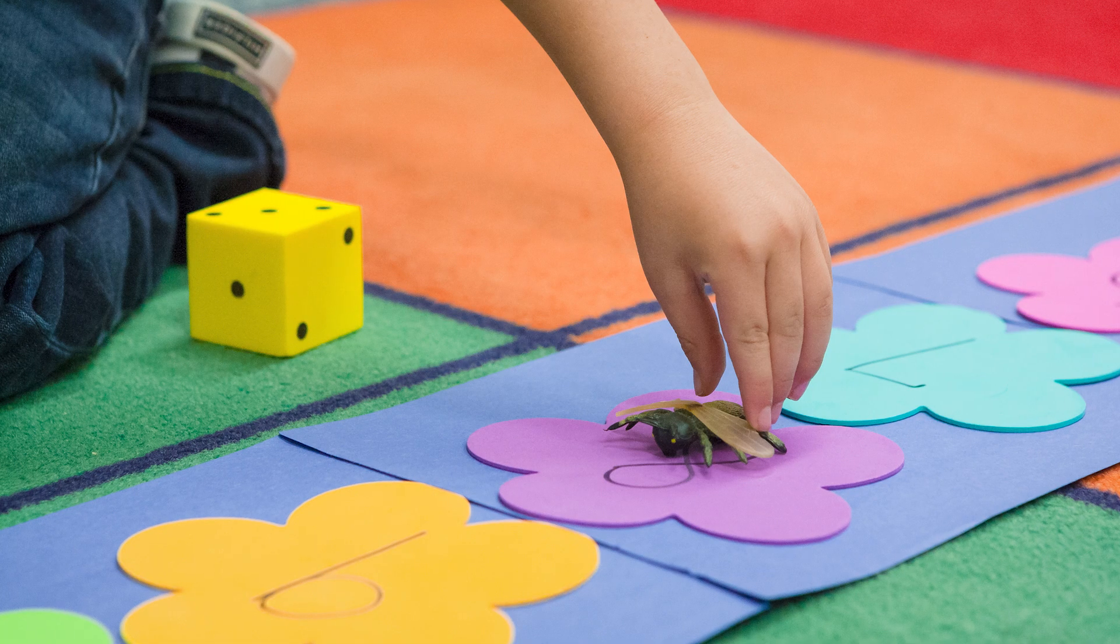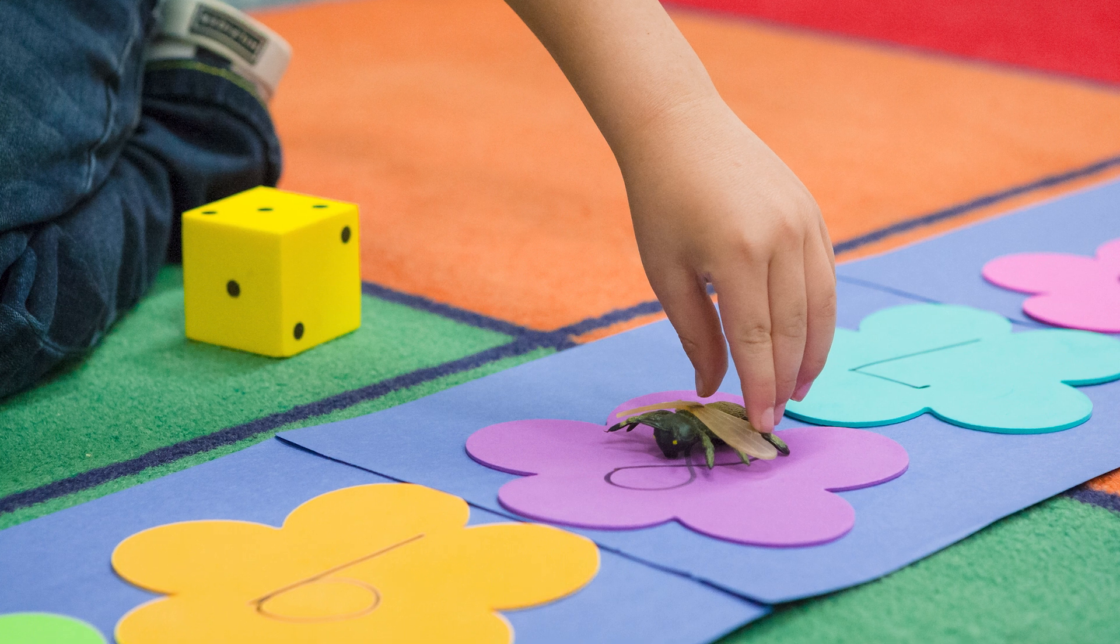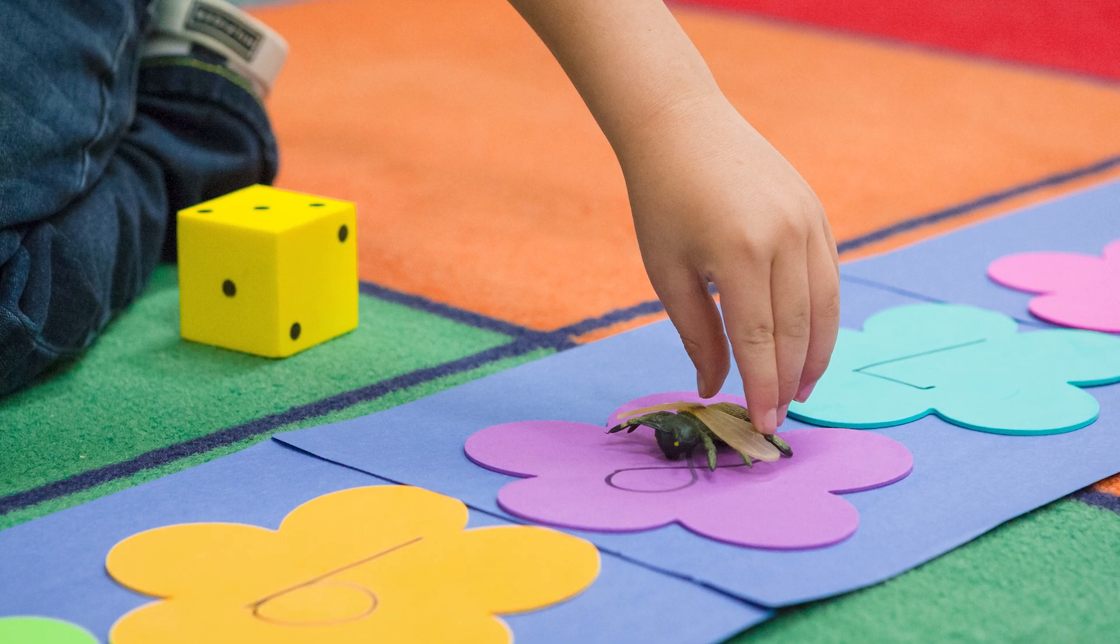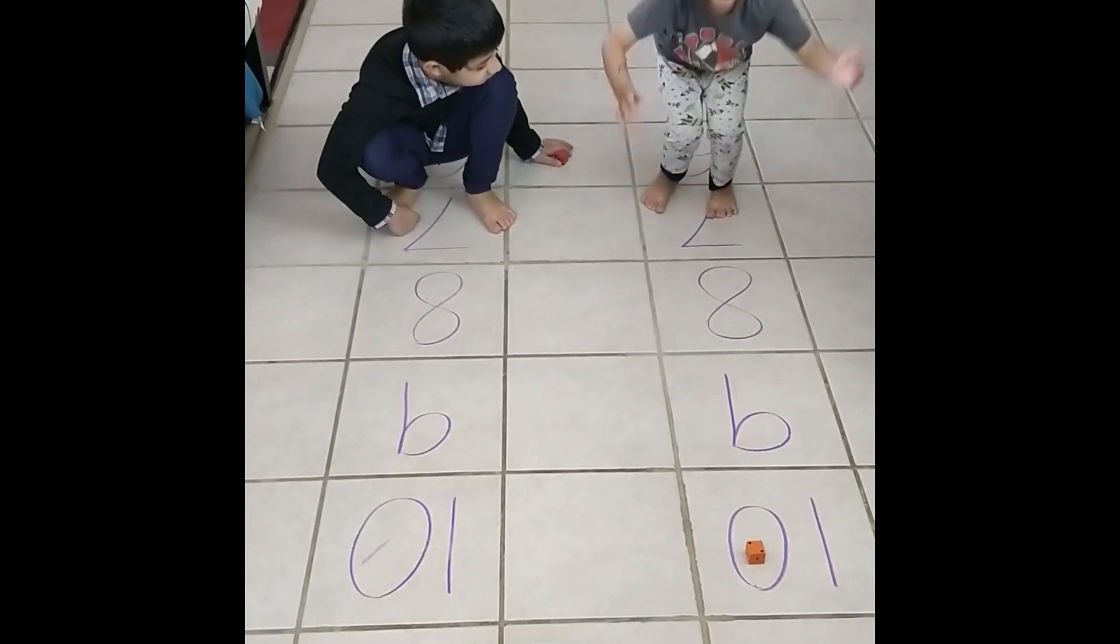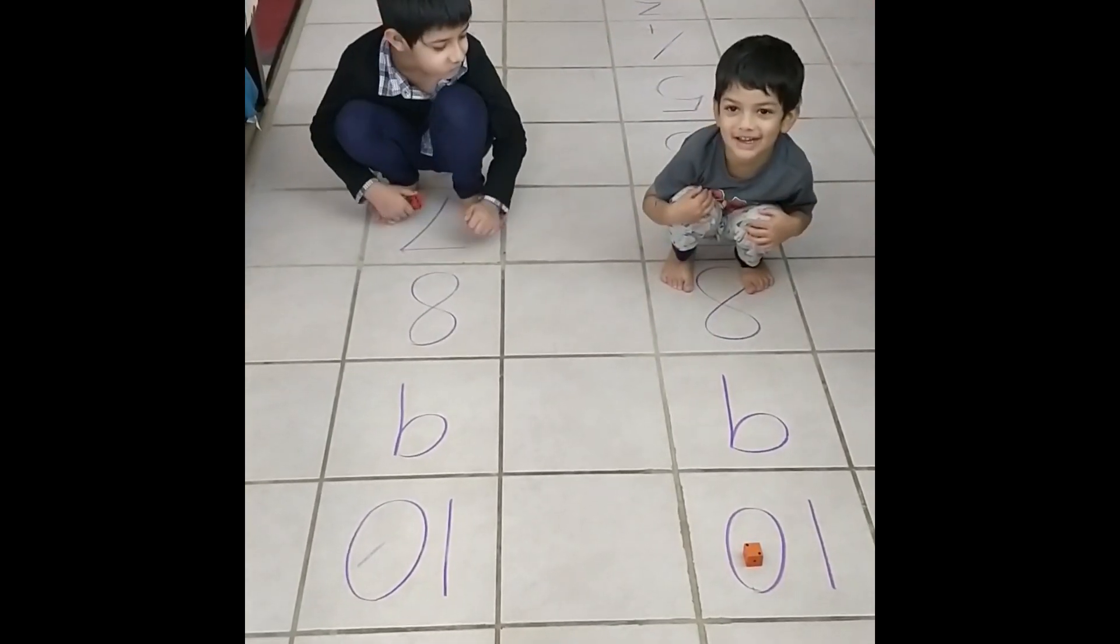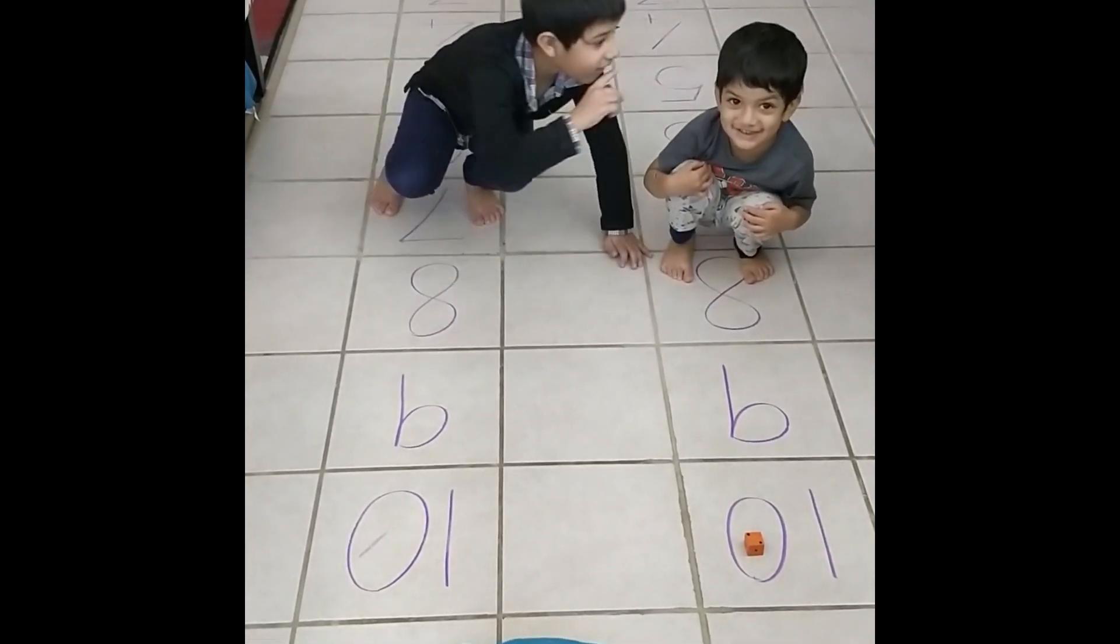It could be jumping on dinosaur prints or jumping on flowers with a butterfly or a bee, whatever topic is interesting to your child. You can also play this game on a number path that you make on the floor, or that you draw outside in chalk and kids become the frogs hopping along.